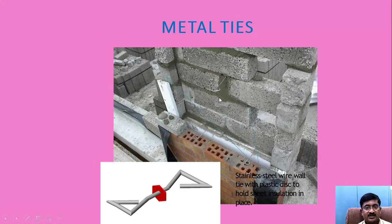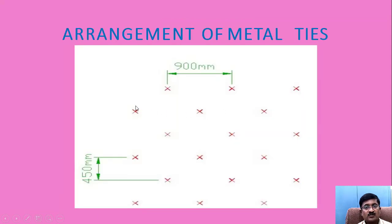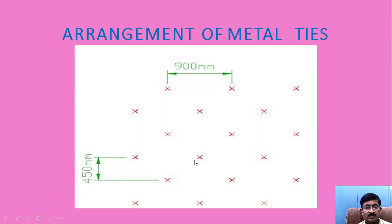You can see how the metal ties are used at different levels — this gives the strength. Various types of metal ties are available in the market. The metal ties are arranged in the wall in a staggered manner. In this photograph, a staggered horizontal distance of 900 mm is shown, and the vertical level between the metal ties is 450 mm. That depends on the size of the bricks used.